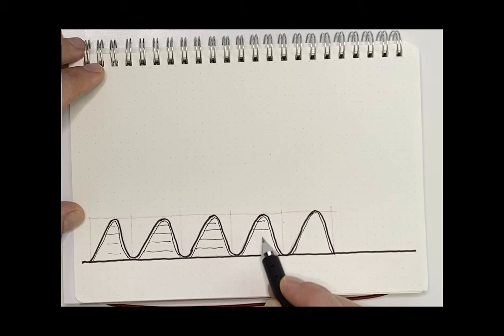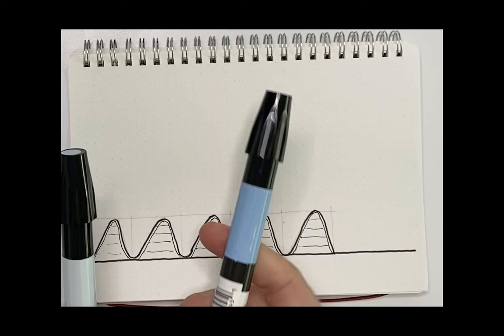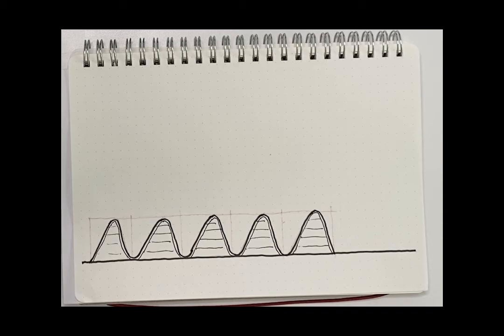Now, we will color our drawing. I have a light blue color here, and I have a dark blue color here. First, we'll use the dark blue to color the water, and then we will use the light blue to color in the glass.